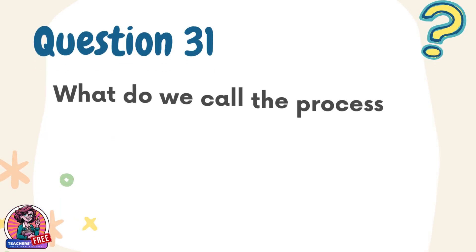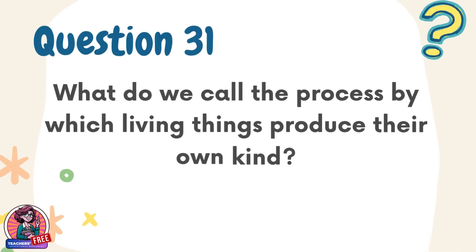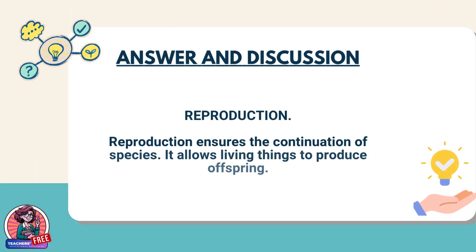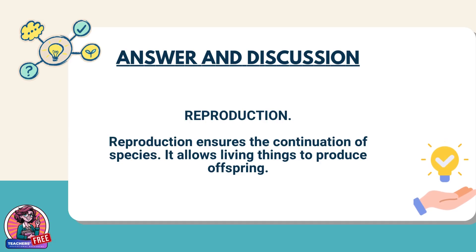Question 31. What do we call the process by which living things produce their own kind? Answer: Reproduction. Reproduction ensures the continuation of species. It allows living things to produce offspring.